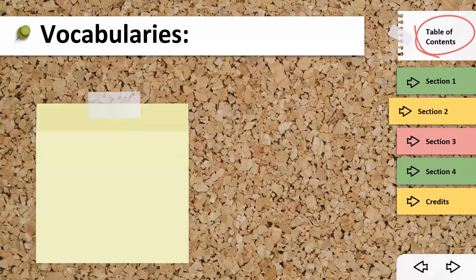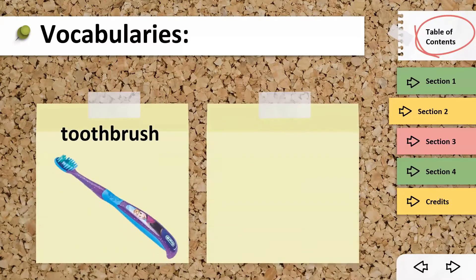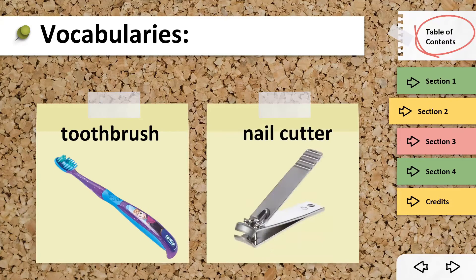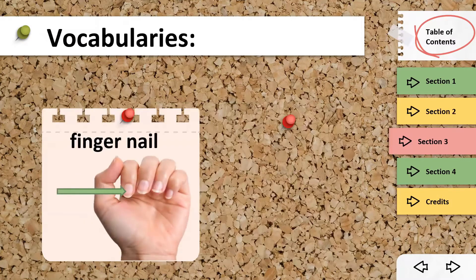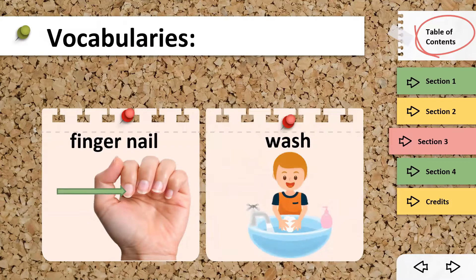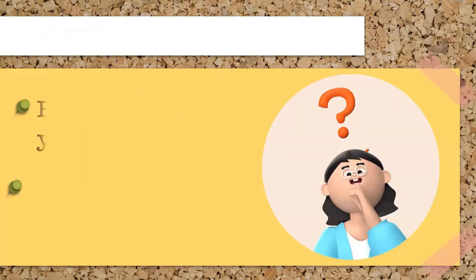Let's start with our vocabularies. First, we have toothbrush — we use a toothbrush to brush our teeth. Next, we have nail cutter — we use a nail cutter to cut our nails. We also have fingernail — these are the nails of our fingers. Next, we have wash — always wash your hands.